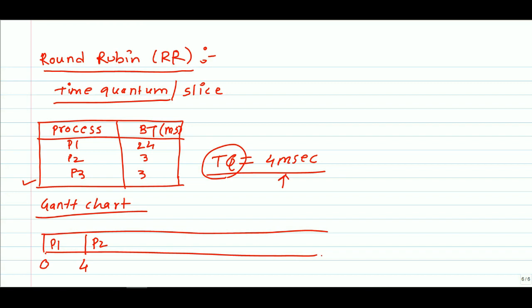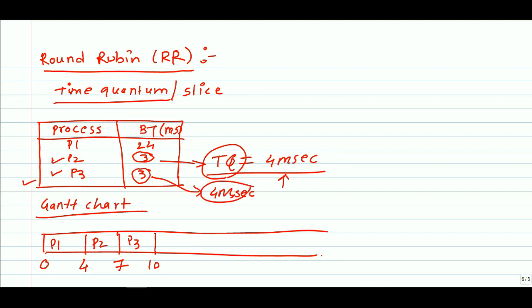The burst time of P2 is 3, which is less than the time quantum of 4. So P2 will be processed for only 3 milliseconds — 4 plus 3 equals 7. P2 is completely executed, then P3 gets access. P3 also has a burst time of 3, so 7 plus 3 equals 10. We are not going to waste 1 millisecond of CPU time for P2 or P3 since they only require 3 milliseconds.